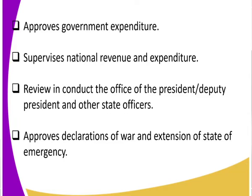They also supervise national revenue and expenditure — overseeing how the government spends. They also get to review the conduct of the president and other state officers. That is why the National Assembly can summon a Cabinet Secretary or other state officers. Finally, it approves declaration of war and extension of a state of emergency — the president cannot declare a state of emergency without approval by the National Assembly.